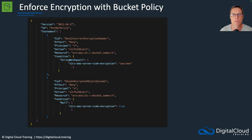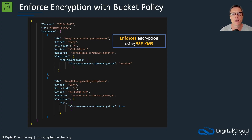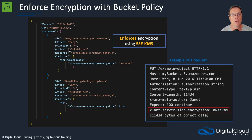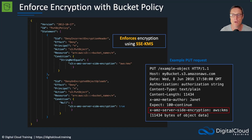We can enforce encryption with a bucket policy. We don't necessarily need to enforce encryption since it's default anyway, but we can enforce the type of encryption. This policy enforces encryption using AWS KMS, specified in the condition: string not equals S3 x-amz-server-side-encryption AWS KMS. That's a deny, so we deny the put object request if it does not include AWS KMS encryption as specified. The put request that includes x-amz-server-side-encryption AWS KMS should be allowed.